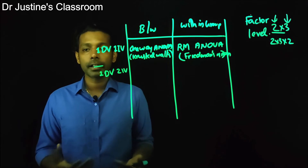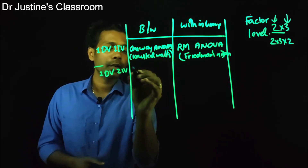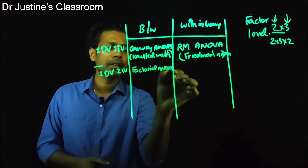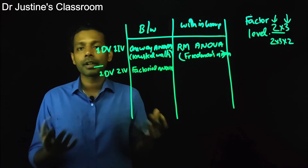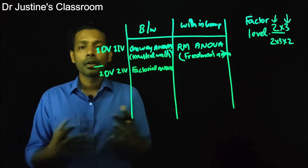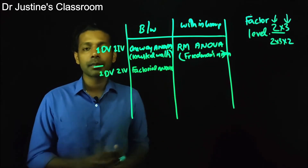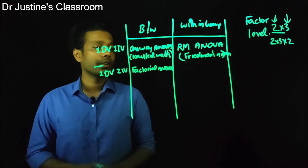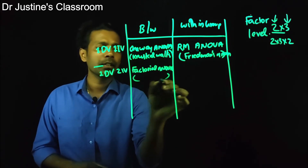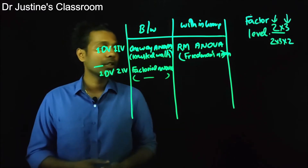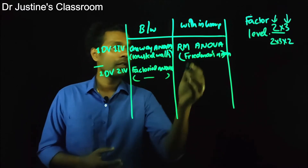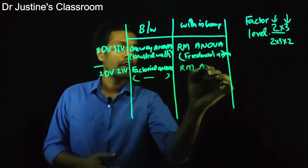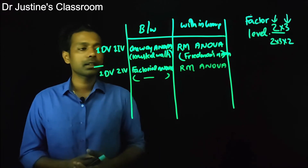When you have more than one independent variable — more than one factor — you move into factorial designs. You can call it a two-way ANOVA for two IVs, three-way ANOVA for three IVs, or four-way ANOVA for four IVs. More generally, it's called factorial ANOVA. There is no well-established non-parametric test for factorial ANOVA. For the within-group version, you use RM ANOVA, which is more sophisticated and can accommodate more possibilities.